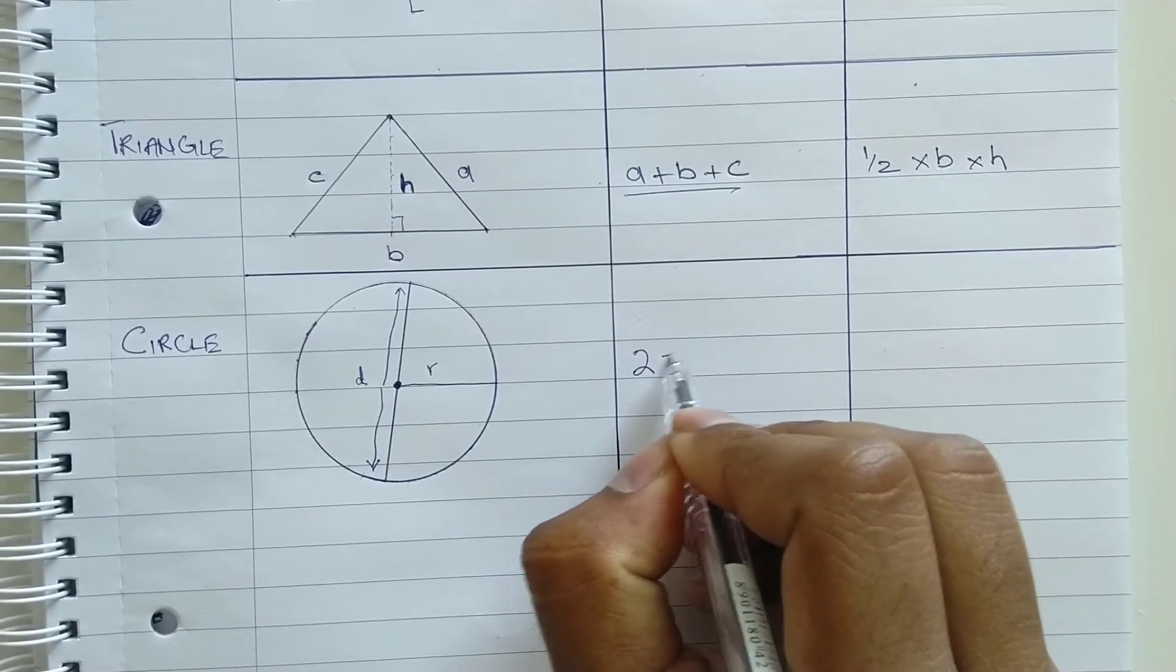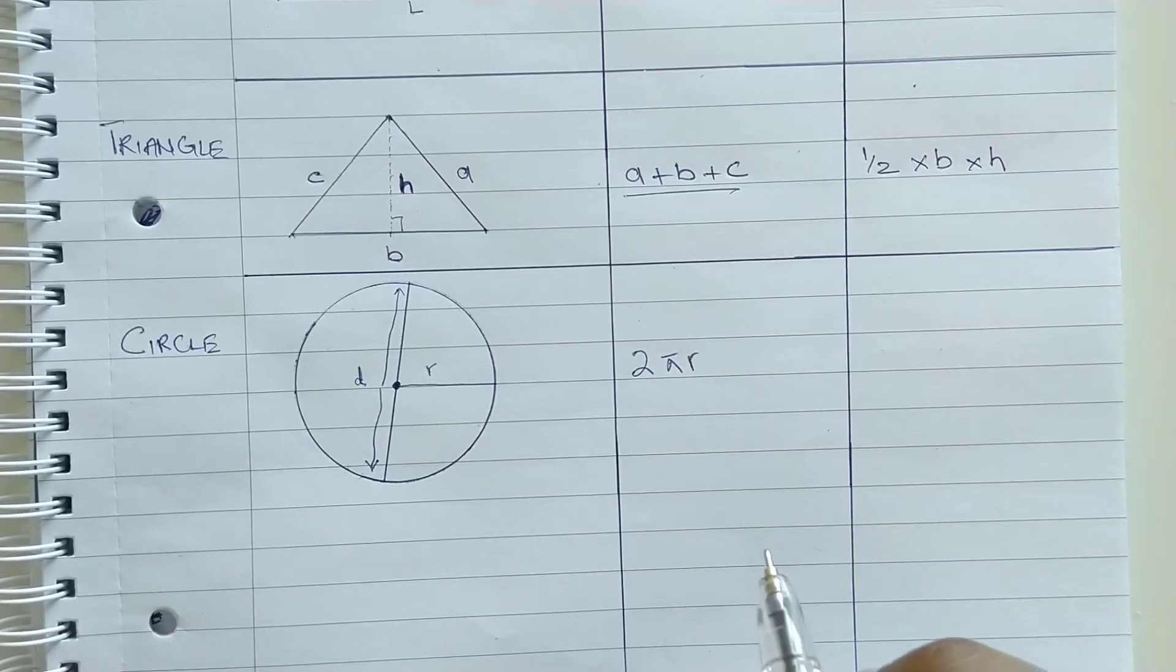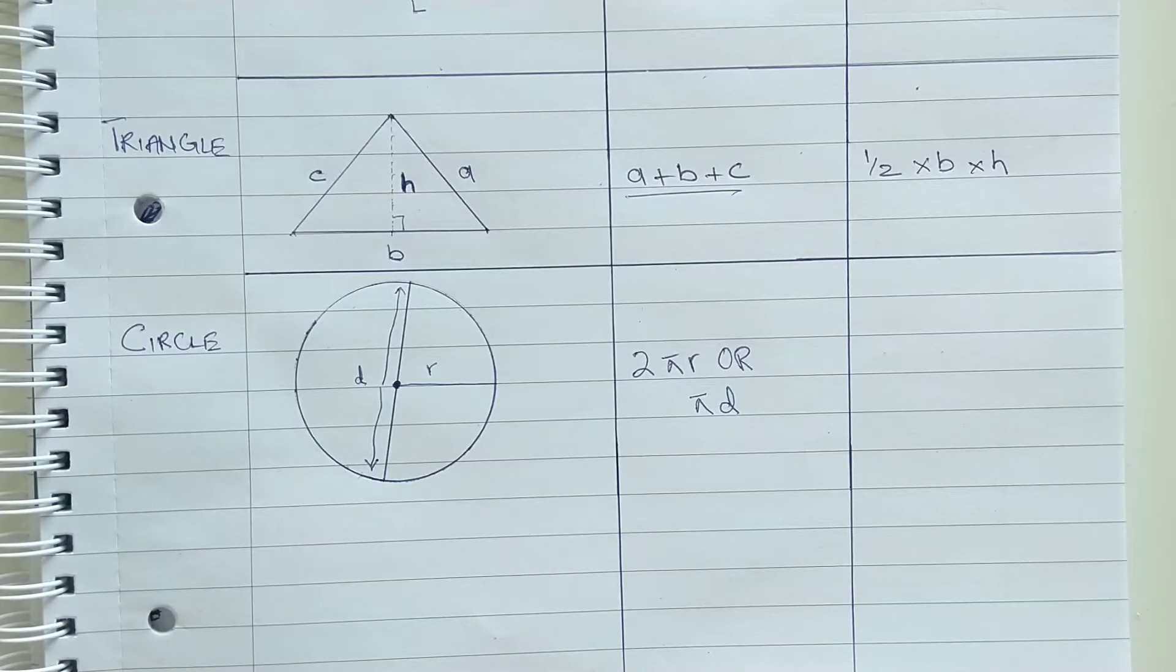The formula to calculate the perimeter of a circle is 2 multiplied by pi multiplied by R or it can also be written as pi D. Just to reduce the confusion, the value of pi is 22 upon 7 or 3.142.